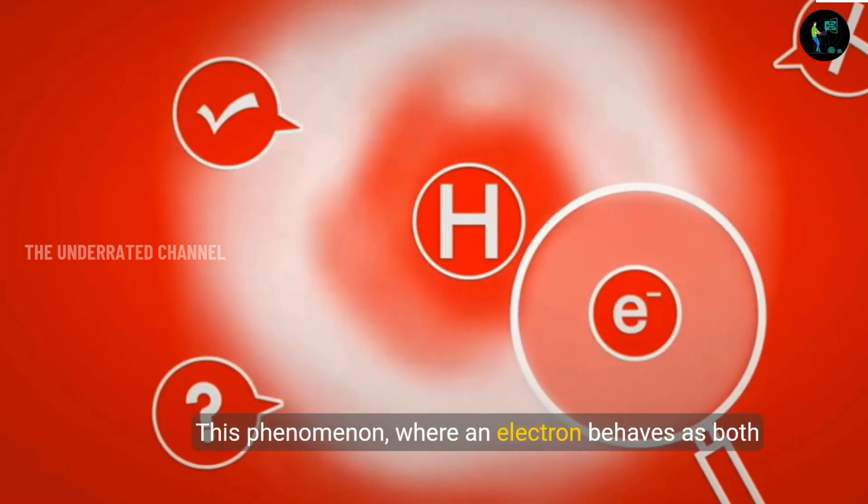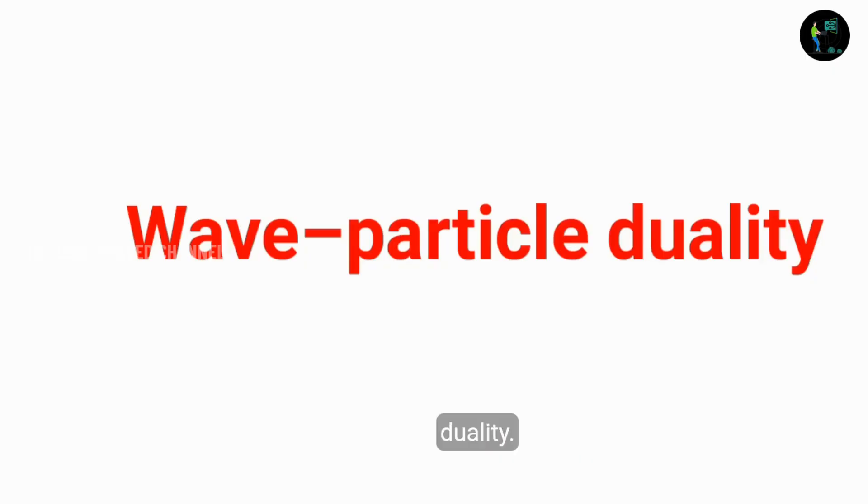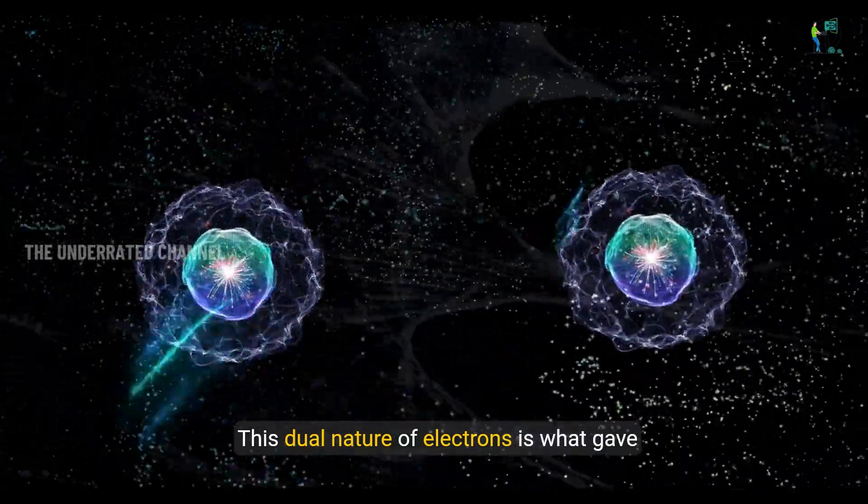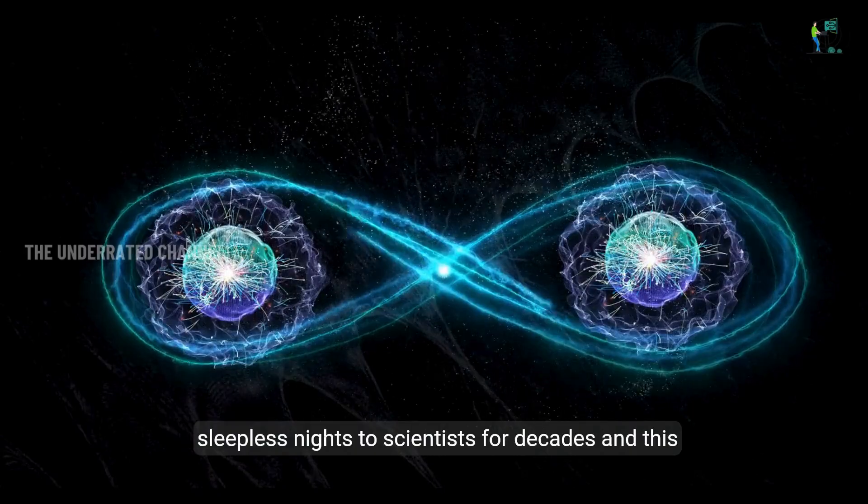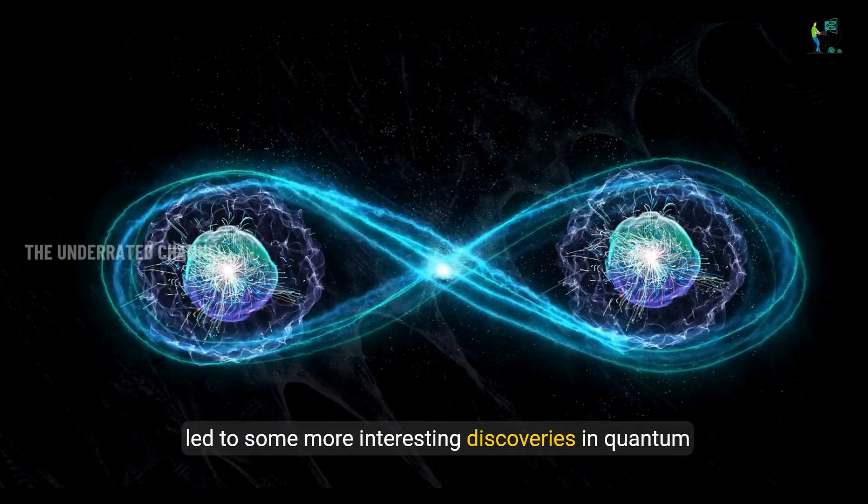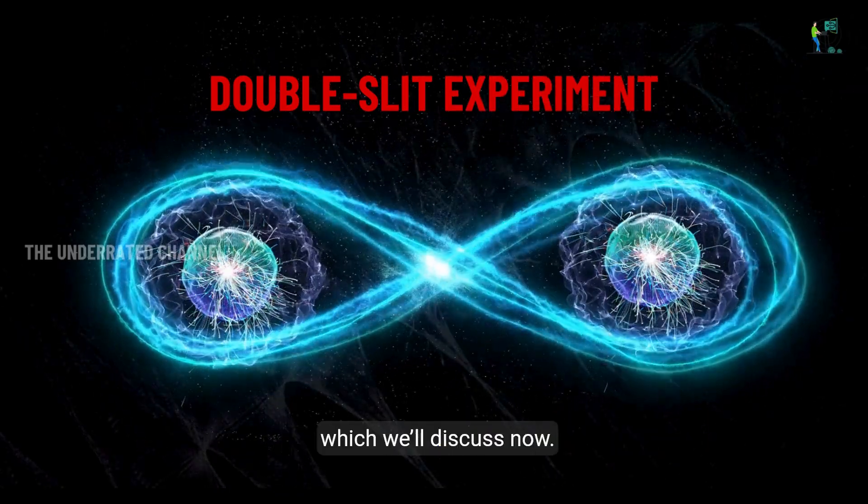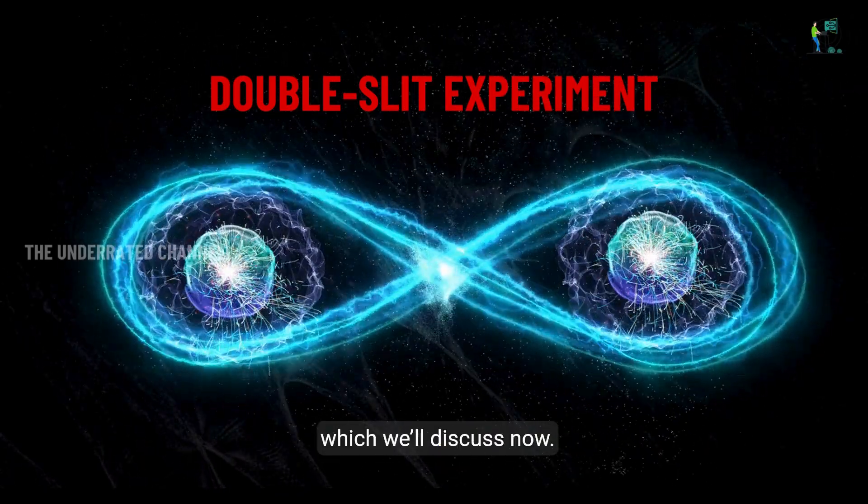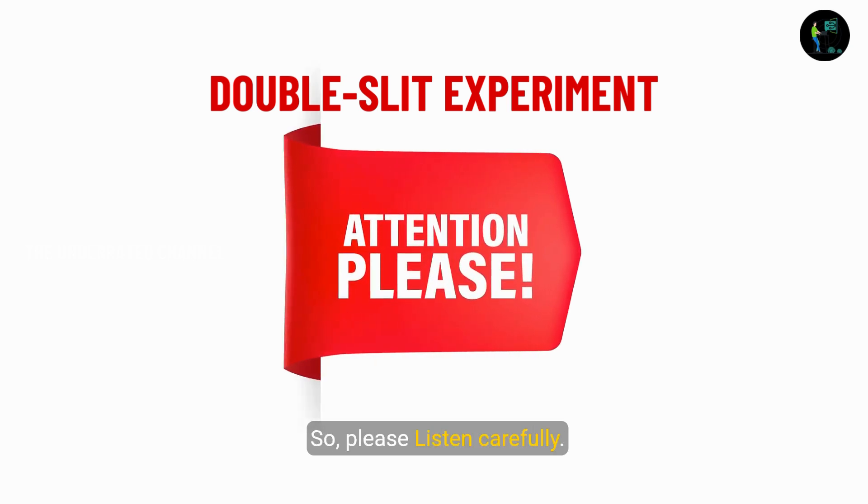In the same way, an electron is not settled as a particle, but its presence is distributed as a wave across space. And when we observe it, it collapses to a single position as a particle. This phenomenon, where an electron behaves as both a wave and a particle, is known as wave-particle duality. This dual nature of electrons is what actually gave sleepless nights to scientists for decades and this led to some more interesting discoveries in quantum physics, including the double-slit experiment, which we will discuss now. Alright, this is one of the game-changing experiments in quantum physics, so please listen carefully.